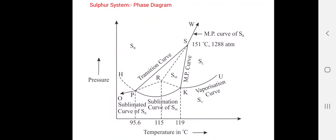There are four metastable curves in the phase diagram, shown by dotted lines. The first metastable curve is PH, the sublimation curve of the metastable SM. The second is curve PR, the sublimation curve of the metastable SR. The third is curve RK, the vaporization curve of the metastable SL. The fourth is curve RS, the melting point curve of the metastable SR.